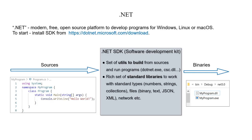The .NET platform is a set of utilities that helps to develop programs for Windows, Linux, and macOS operating systems. It's open and free — you don't have to pay anything to write programs. In order to start programming, it's enough to install the SDK software development kit. In addition to helping utilities, it also contains a rich set of libraries for frequently performed actions, for example to work with standard types like number, string, or collections, to read and write different file formats, to work with network, and so on. After installation, it will be possible to generate executable binary files from the text source code of the program.